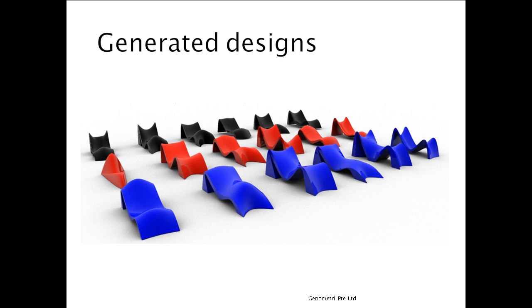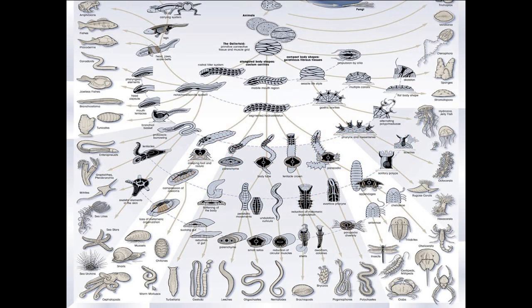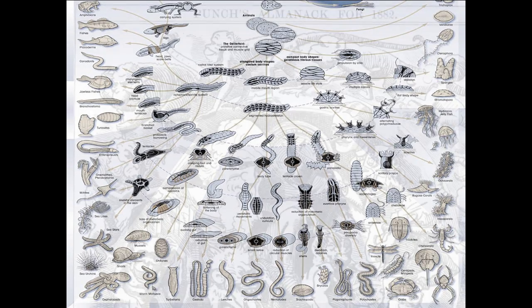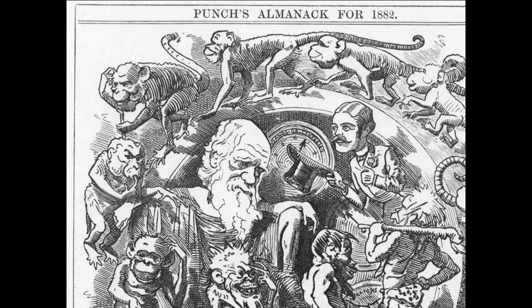There is nothing new in this. This is how we were designed. Nature has been designing this way for billions of years. The entire spectrum of life on Earth was generated using a design process that Charles Darwin discovered 150 years ago. Thanks to later developments in genetics, nature's design process is less and less of a mystery now.